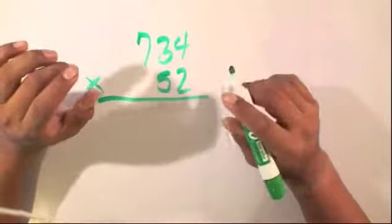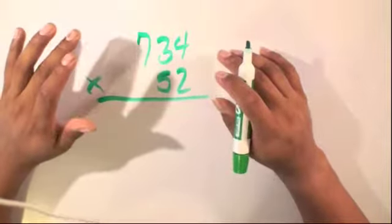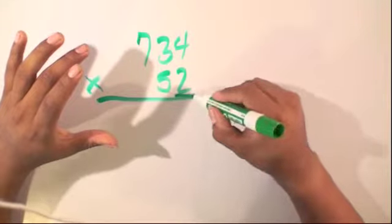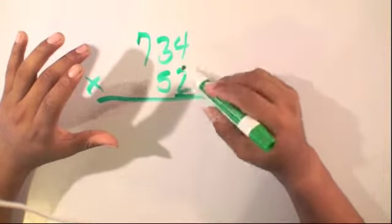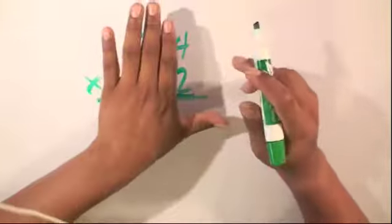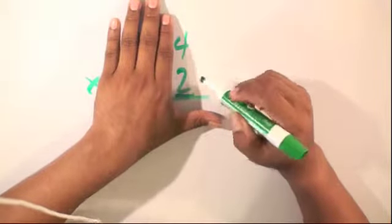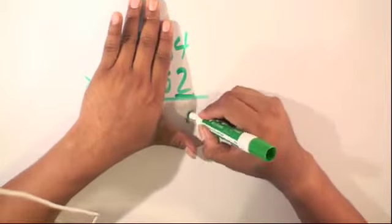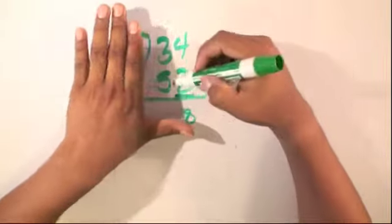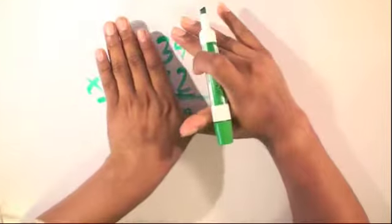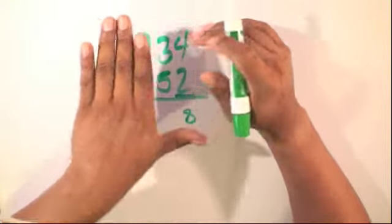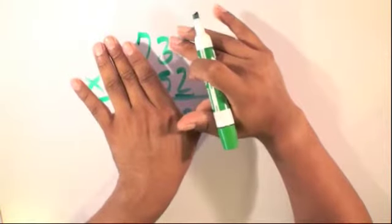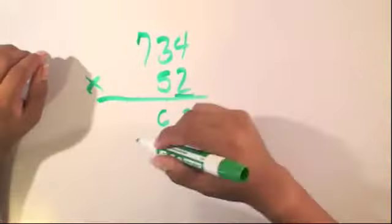So we can first start on the right. We're going to start first with the number 2, and multiply it with each number on top. So, starting on the right, we have 4 times 2, which is equal to 8. Now, we'll look at 3 times 2, which is equal to 6, and 7 times 2, which is equal to 14.